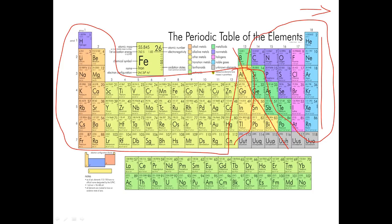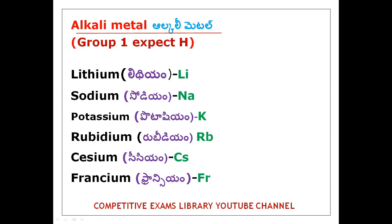The metals on the left side — we will say the Alkali Metals. Alkali Metals are the first group, Group 1. Hydrogen is in Group 1 but we eliminate hydrogen. So Group 1 Alkali Metals are Group 1 except hydrogen. This is the Alkali Metals category.